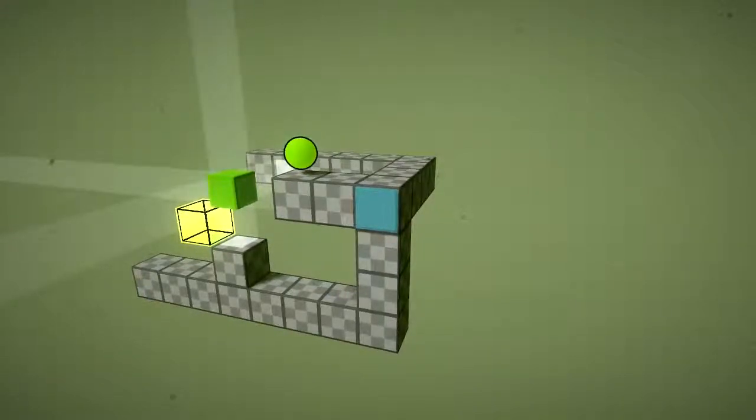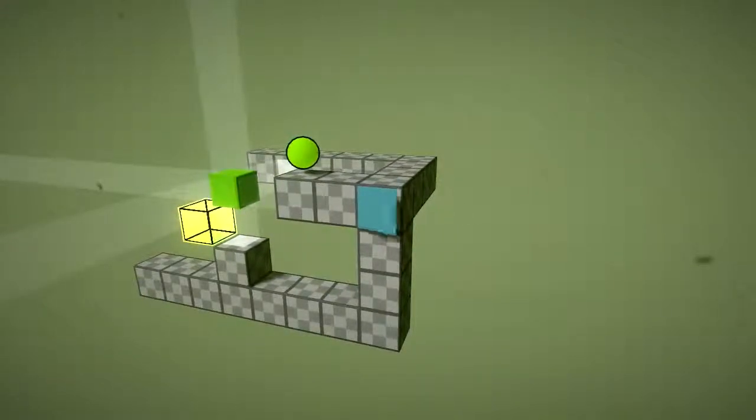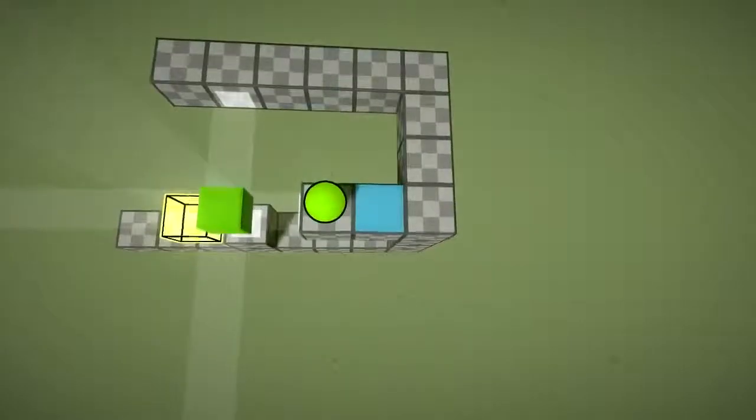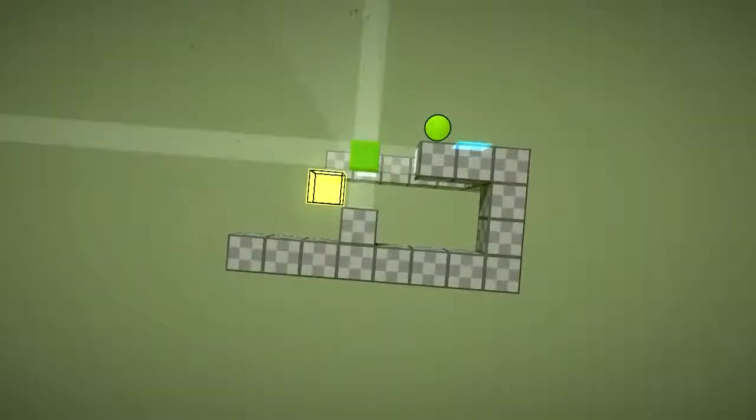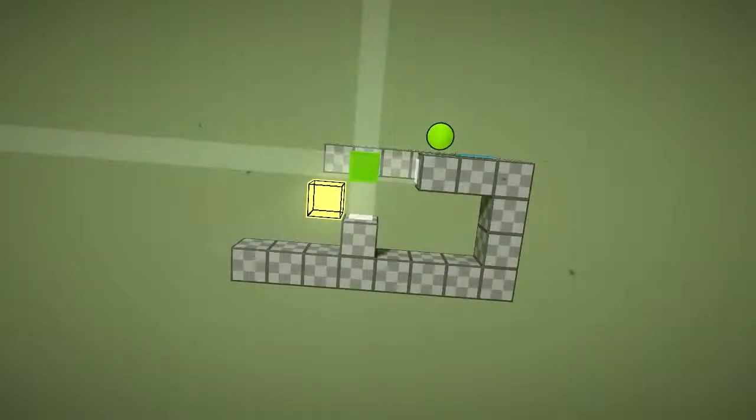This level is surprisingly easy given how late it is in the world. We need to get the larva down into that floating box, which basically means it's going to have to be sitting on top of the whale at some point.